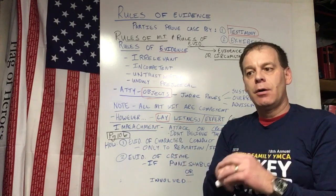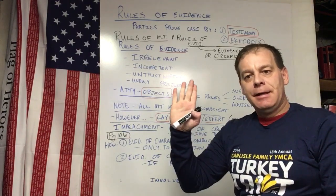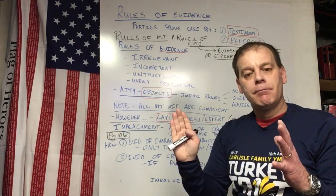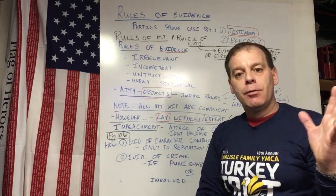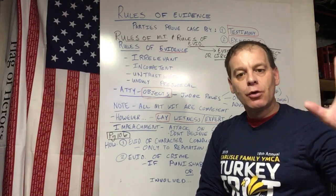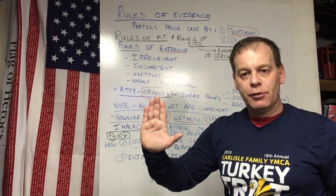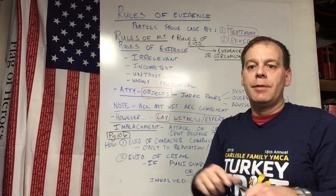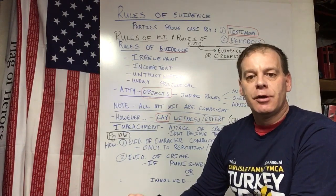Irrelevant evidence is evidence outside the scope of our disagreement. For example, in your mock trial the defendant has been married previously. There could be an argument that this is irrelevant — whether the defendant has been married previously may not be relevant to whether she killed her husband this time. However, there is an argument that it could be relevant. If one side thinks it's relevant and the other thinks it's irrelevant, the judge makes that determination, and it may come down to whether it would be unduly prejudicial.